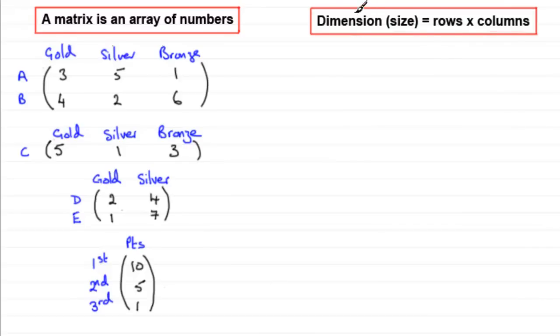This size is often called the dimension. It's the number of rows by the number of columns. And what we tend to do is not write any notation on the outside of a matrix. We just write them without those definitions.